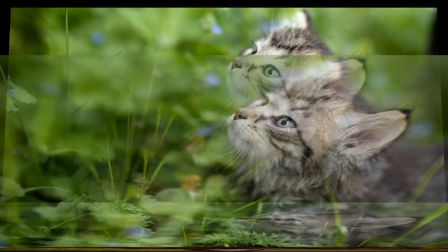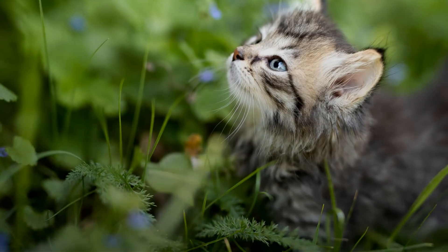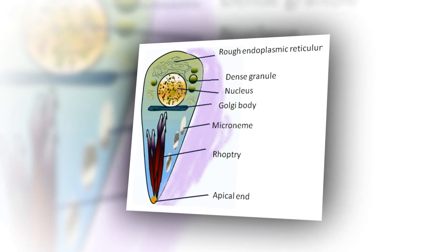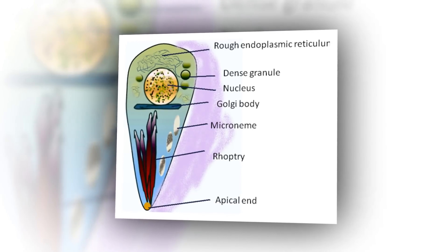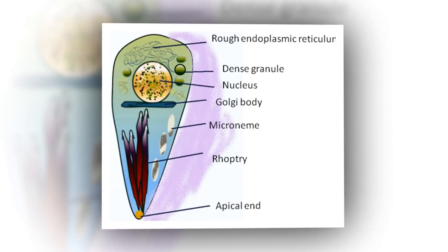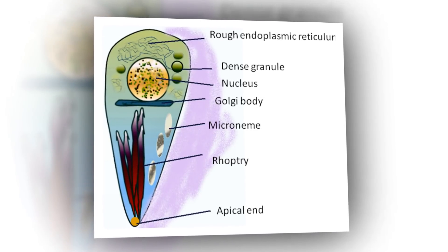Cats are the only known definitive hosts in which the parasite may undergo sexual reproduction. In humans, T. gondii is one of the most common parasites in developed countries. T. gondii can persist in heart muscle, where it forms tissue cysts that can remain through the host's lifetime. Heart disease can be linked with chronic infection of T. gondii.